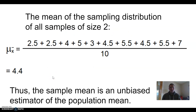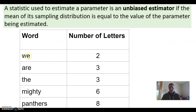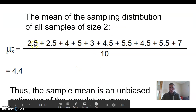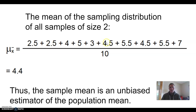Here are all the possible sample means. For example, if we average out 'we' and 'are' — 2 and 3 letters — that's 2.5. 'We' and 'the' is also 2.5. 'We' and 'mighty' — averaging 2 and 6 — is 4. Adding up all possible sample means from samples of size two, there are 10 of them, and dividing by 10 gives 4.4.